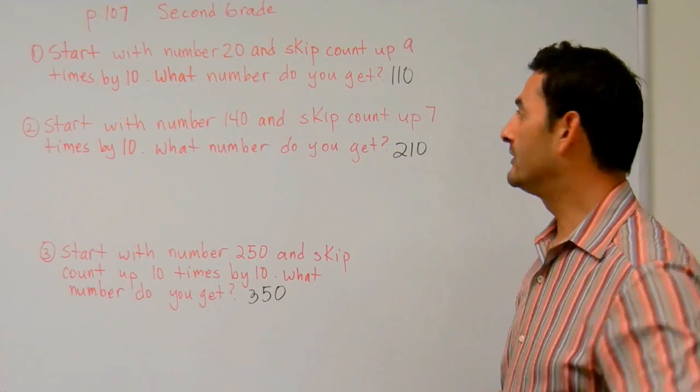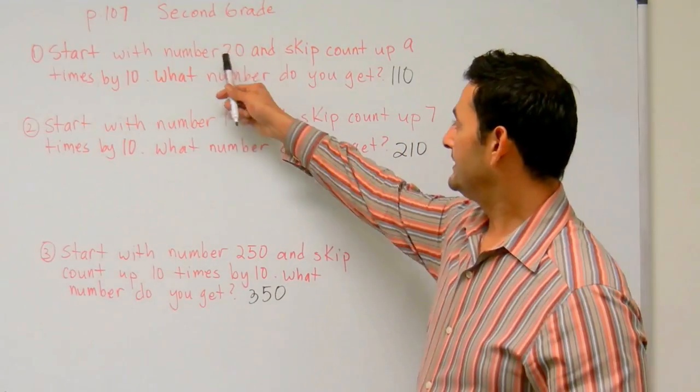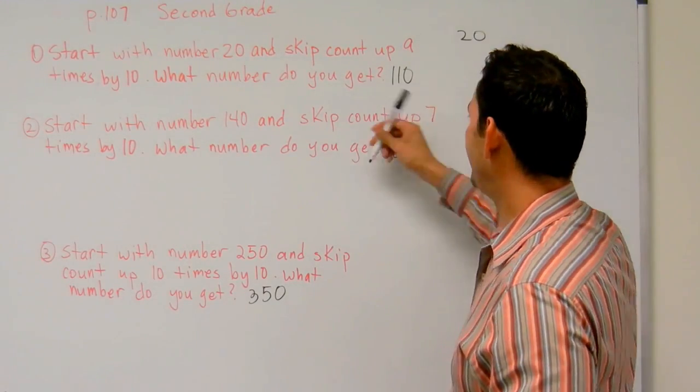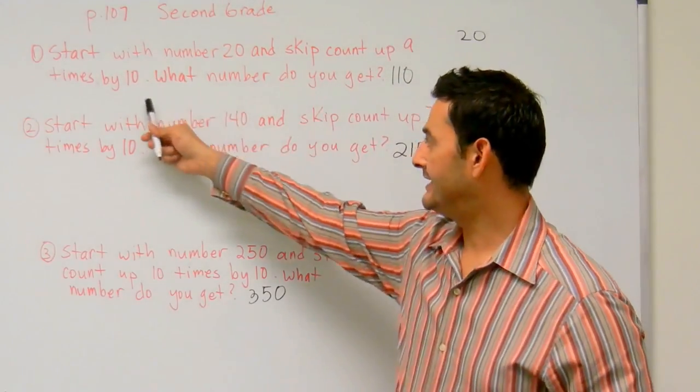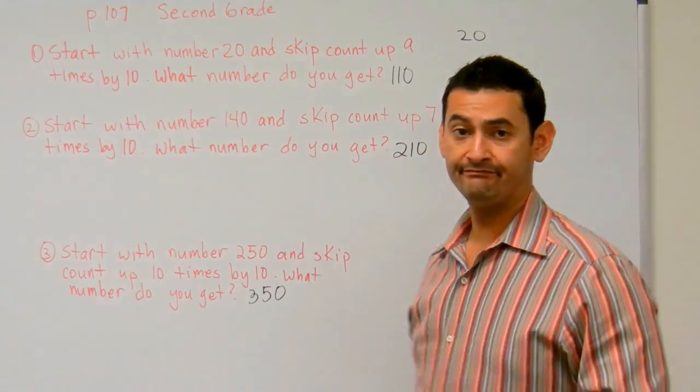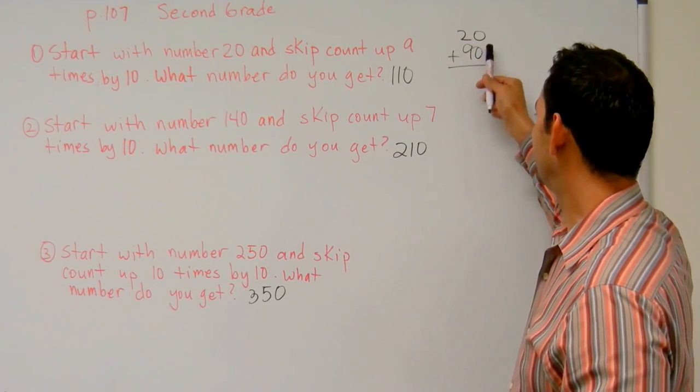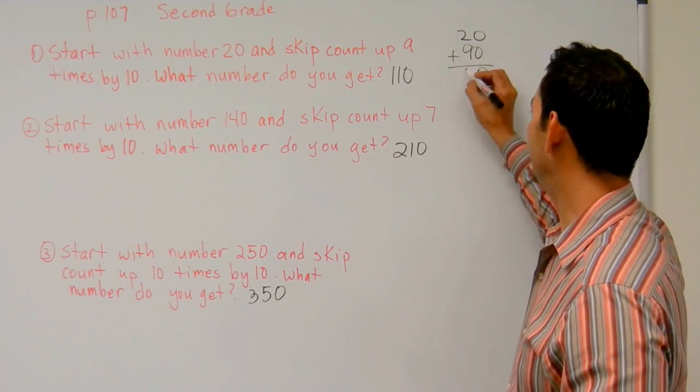Let me just show you one more thing, okay? So this is actually, we're actually adding, okay? So if we start with number 20, and if we're going to skip count nine times by ten, that's nine times ten. That's 90. That's zero there. Nine, 10, 11, 110.